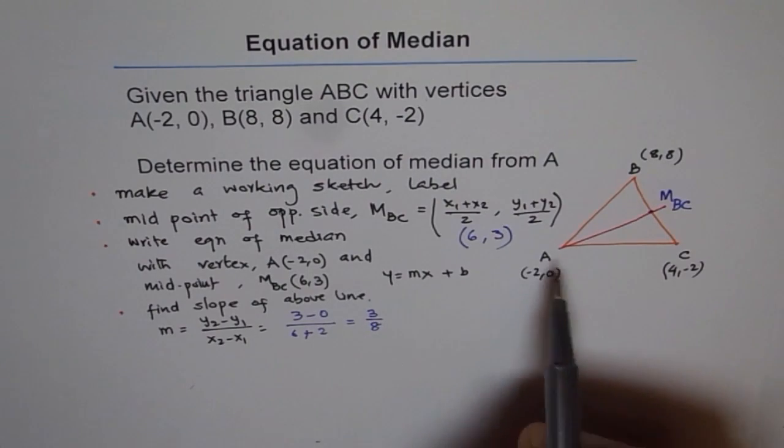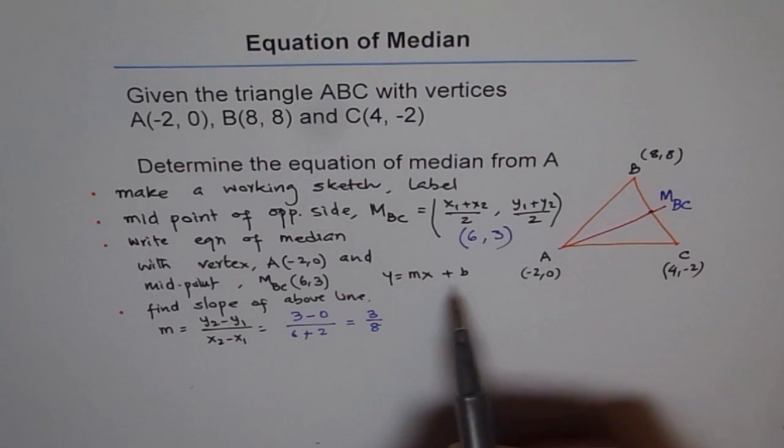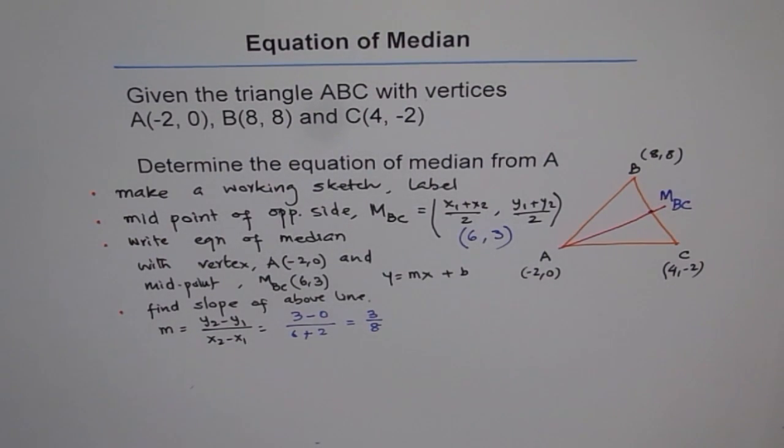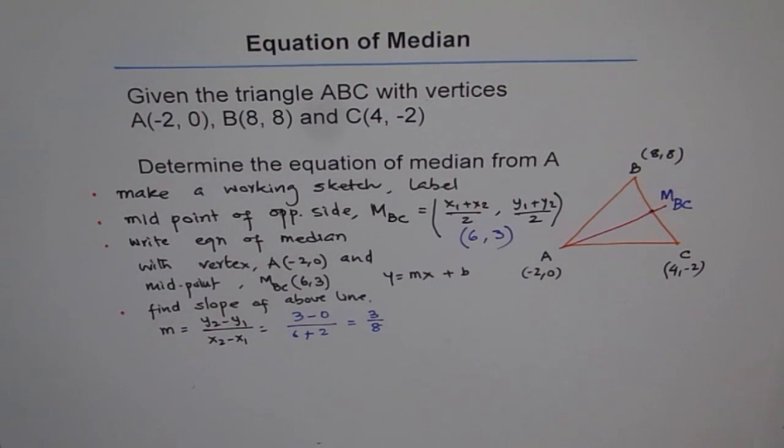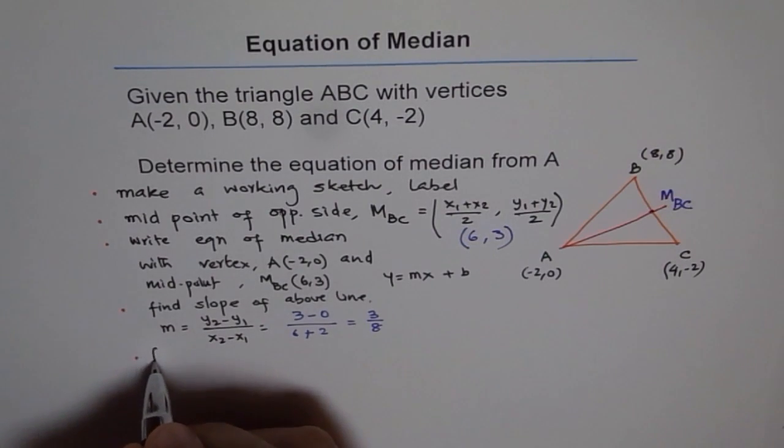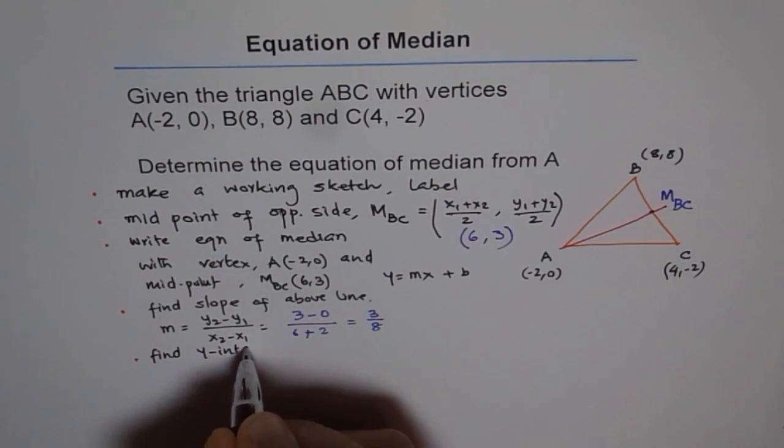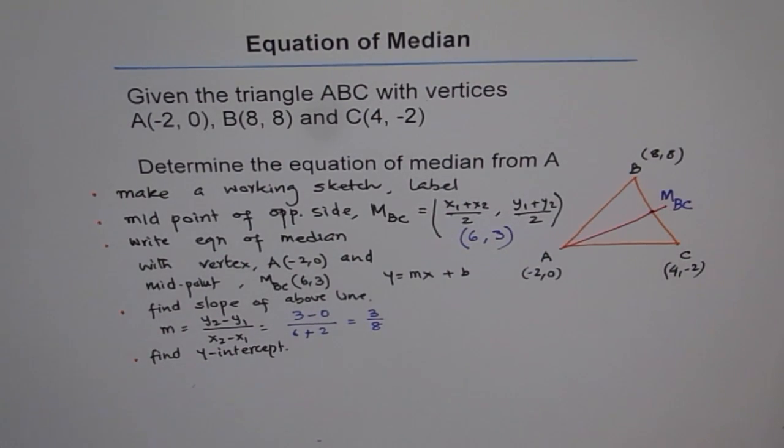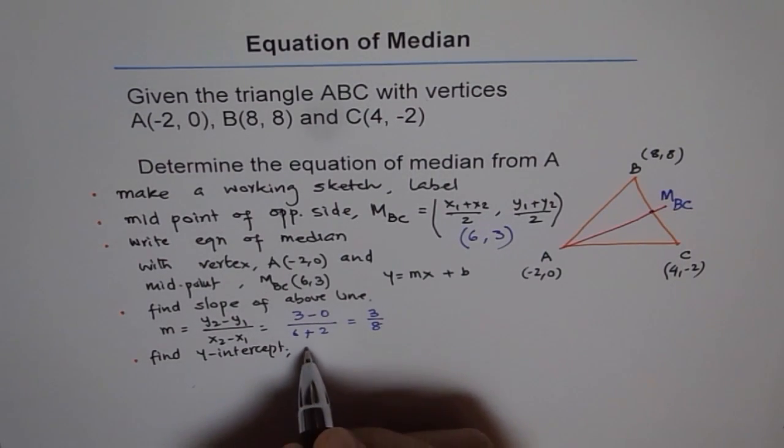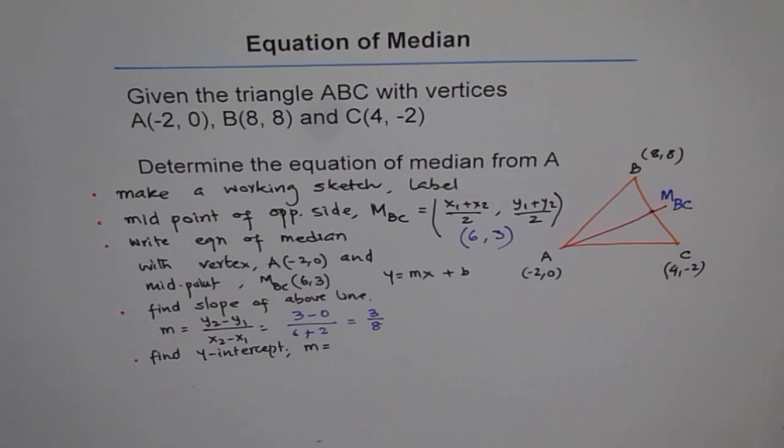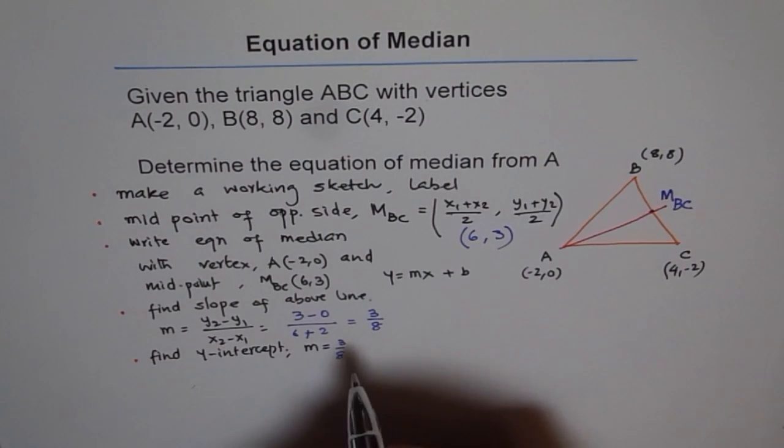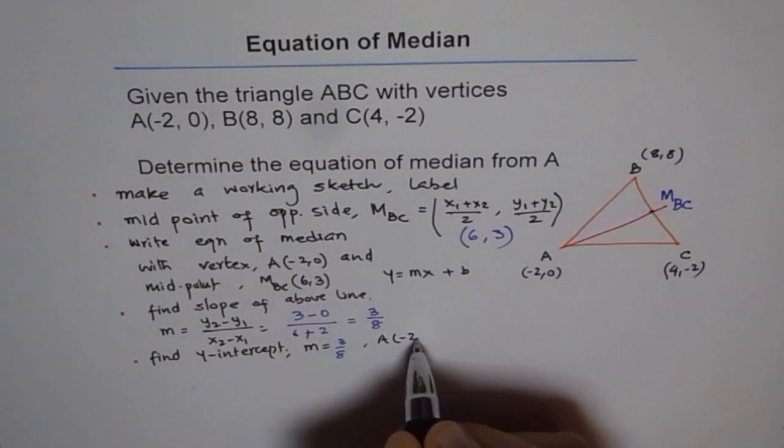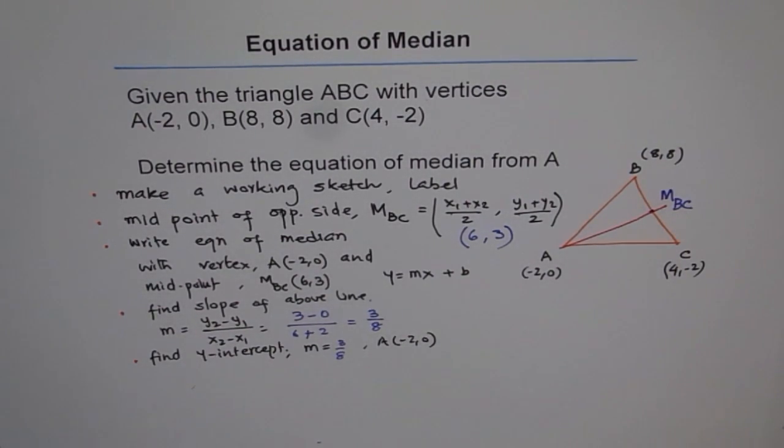So that's the slope for us. And now, so from using these two points, we got the slope. Now here, we can use one of these points to find the value of B. So we'll write, find Y-intercept now. So a lot of steps for you to do. So find Y-intercept. So we can use Y equals MX plus B. We know the slope using slope, which we got, and a point. So we know the slope. Slope for us is 3 over 8. And the point, which could be A. A is a good point for us to use. (-2, 0).